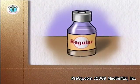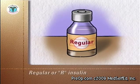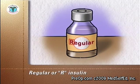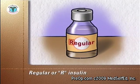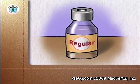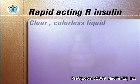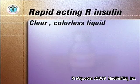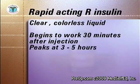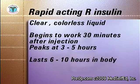Another solution of insulin that acts rapidly is called regular, or R-insulin. This insulin does not act as quickly as Humalog or Novolog. Regular insulin is a clear, colorless liquid. It begins to work 30 minutes after injection, peaks at 3 to 5 hours, and lasts 6 to 10 hours in the body.